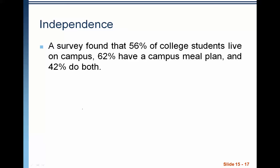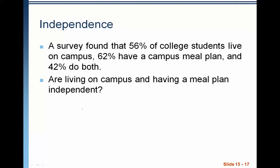So let's look at an example here. A survey found that 56% of college students live on campus, 62% have a campus meal plan, and 42% do both. So is living on campus and having a meal plan independent? If I know that a student lives on campus, does that increase or decrease the probability of them having a meal plan? We can check this to see if they're independent. So what we're looking for is does P of meal plan given living on campus equal P of meal plan?